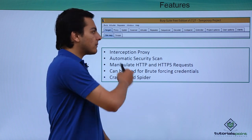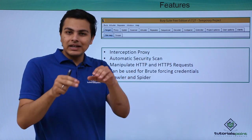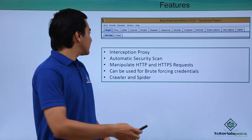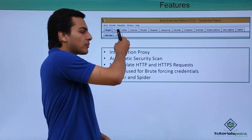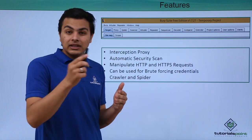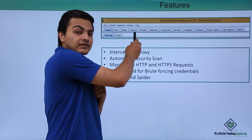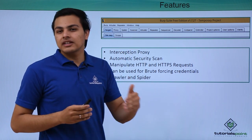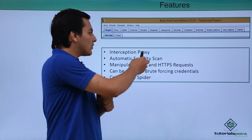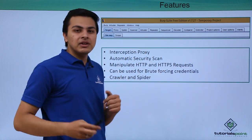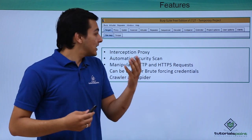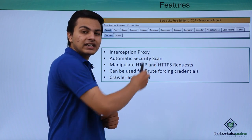Burp Suite has different tabs, each with different functionality. There is a Proxy tab used for intercepting traffic, a Spider tab used for crawling websites, a Scanner tab which does automatic security testing of various web applications and generates a report, and an Intruder tab which is used for brute forcing or performing password authentication attacks.